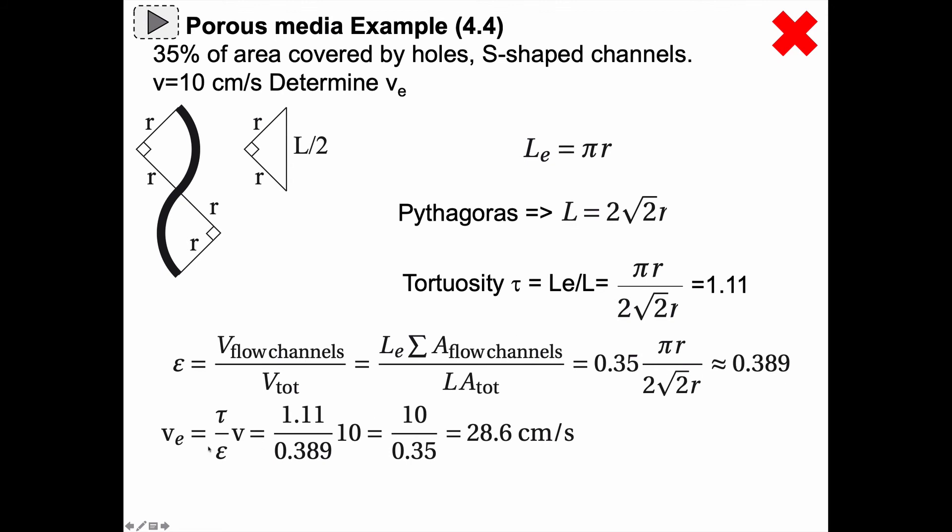So the effective velocity in the channels, that's the tortuosity divided by the porosity times the apparent velocity and the apparent velocity was 10 centimeters per second. So we got 1.11 divided by 0.389 times 10 and we get 28.6 centimeters per second.